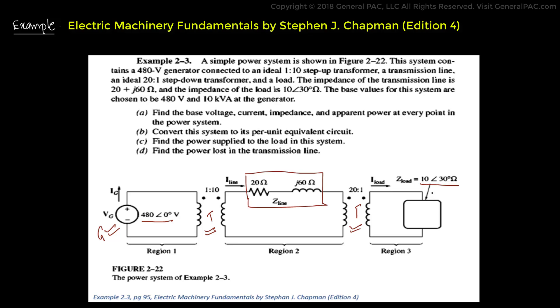Now in this example, we are told that the base value of the systems are 480 volts and 10 kVA at the generator. And in part A, we are asked to find the base voltage, current impedance, and apparent power at every point in the power systems.